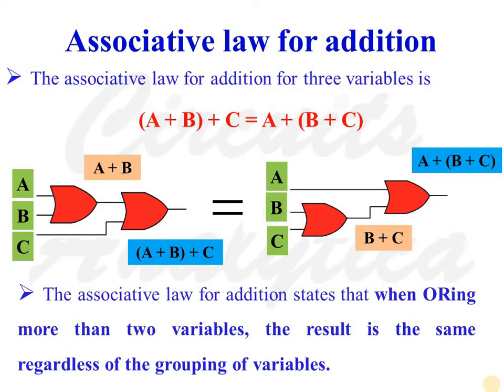Associative law for addition states that when ORing more than two variables, the result is the same regardless of the grouping of variables. So if there are three variables A, B, and C: A plus (B plus C) is the same as (A plus B) plus C.